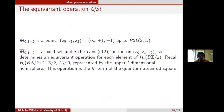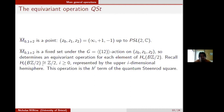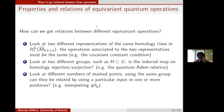As a firmer example: the Deligne-Mumford space with 1+2 marked points is itself a point, which we can take to be (∞,+1,−1) up to PSL(2,C). This is clearly fixed as a set and determines an equivariant operation for each element of H_*(BZ/2), which is Z/2 in each degree. The representative of the upper i-dimensional hemisphere gives exactly the h^i term of the quantum Steenrod square.